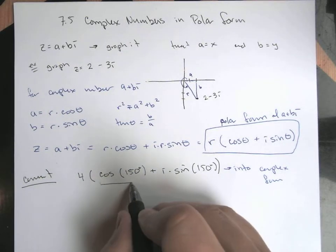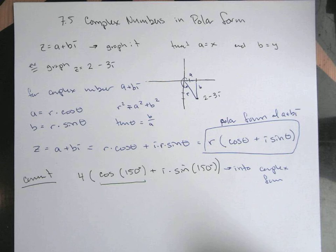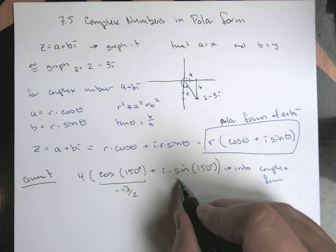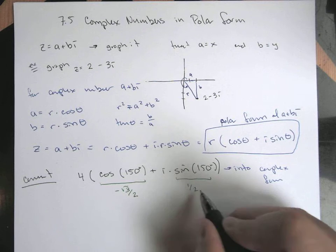So cosine at 150, cosine, this is quadrant 2, is going to be negative. So that's going to be negative root 3 over 2. Sine at 150, that would be 1 half.